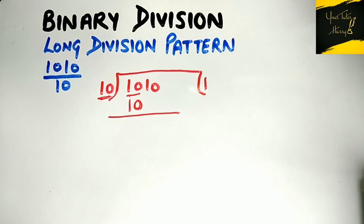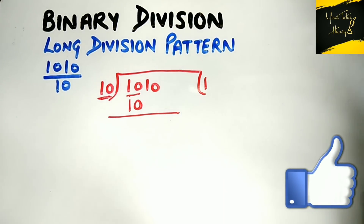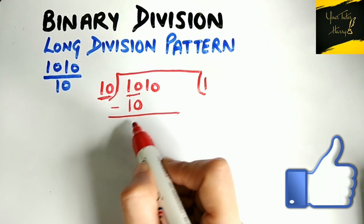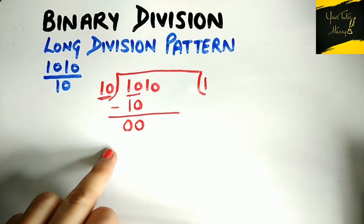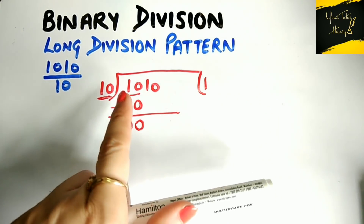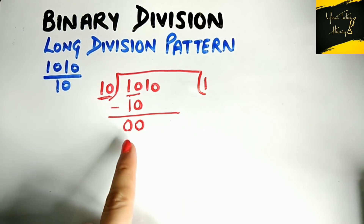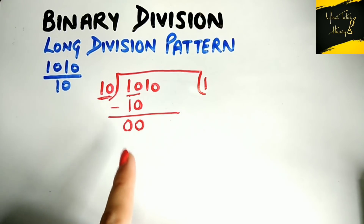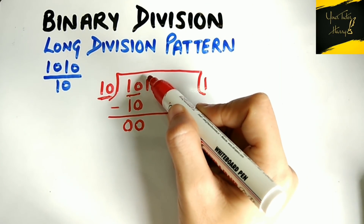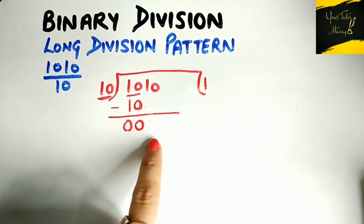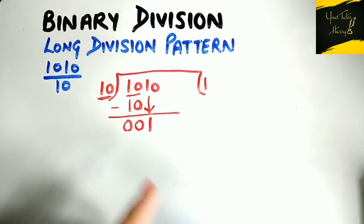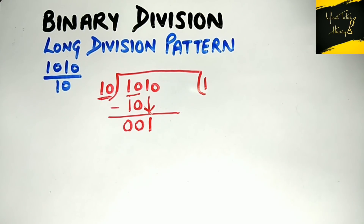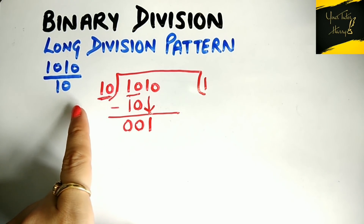We subtract these two terms from each other. After subtraction: 0 minus 0 is 0 and 1 minus 1 is 0, so as a remainder we get nothing — because '10' minus '10' gives us '00'. We then move to the third bit. The third bit is 1; we bring it down to form the number '001'.